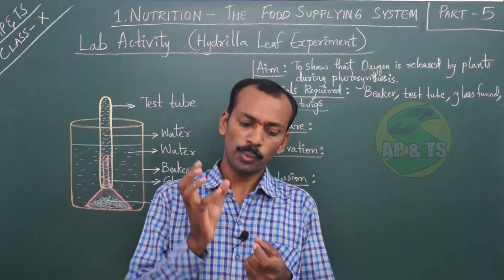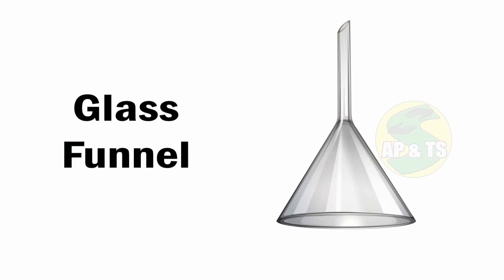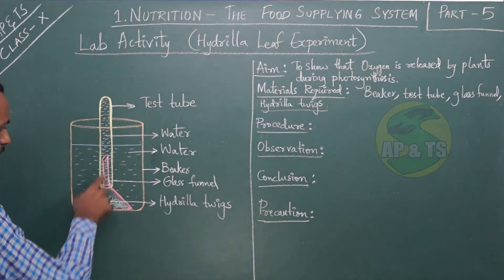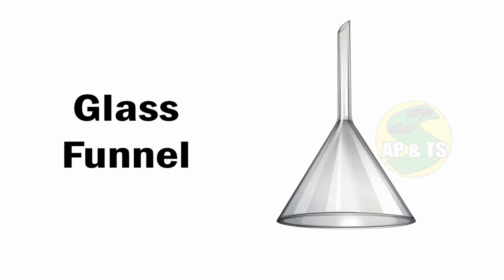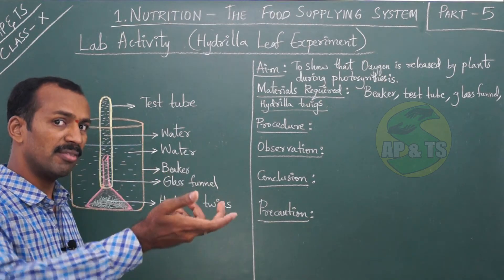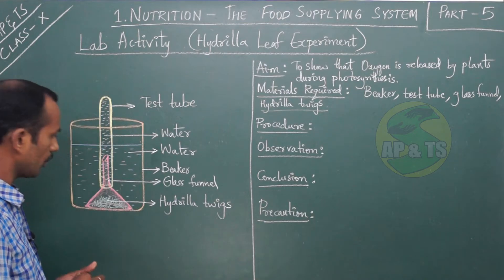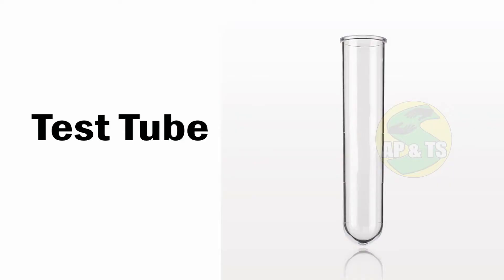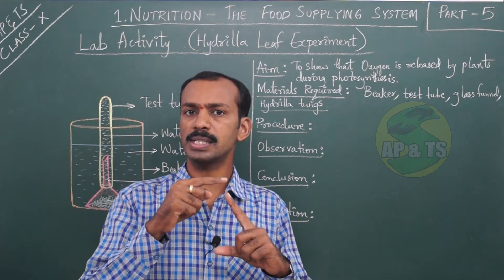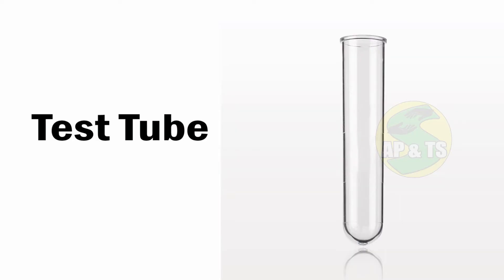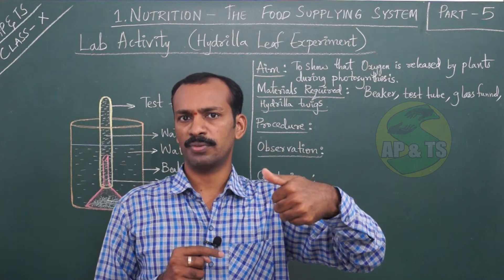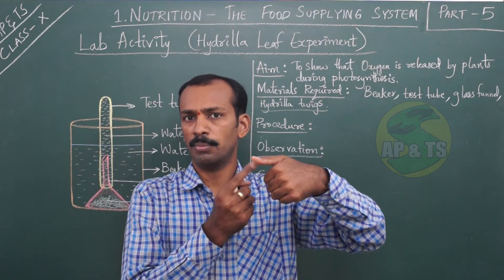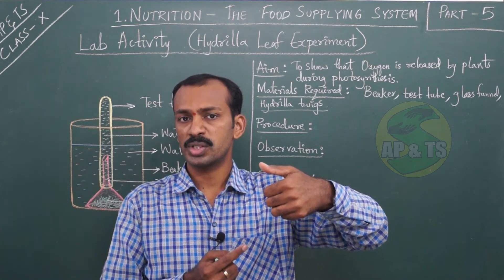After placing the hydrilla twigs in the beaker, place a funnel over them in an inverted position. The funnel is cone-shaped with a long cylindrical tube on one side. Now take a test tube and fill it completely with water — there should be no gap. Fill it up to the brim, meaning up to the tip of the test tube. Then use your thumb to close the mouth of the test tube so there is no chance of water escaping.